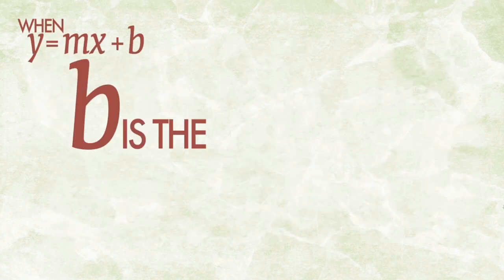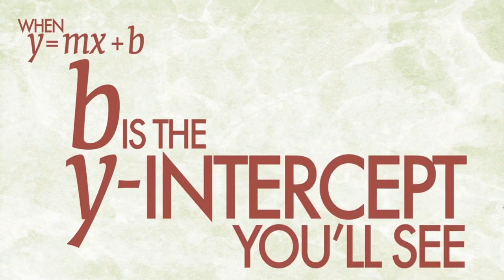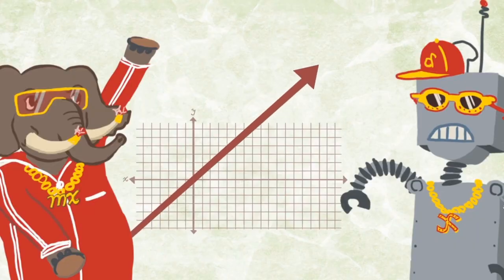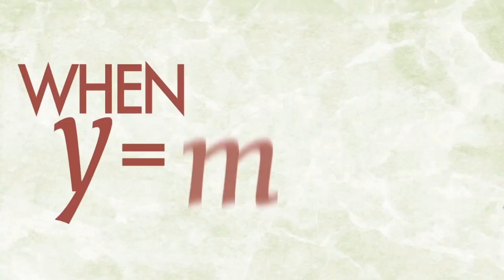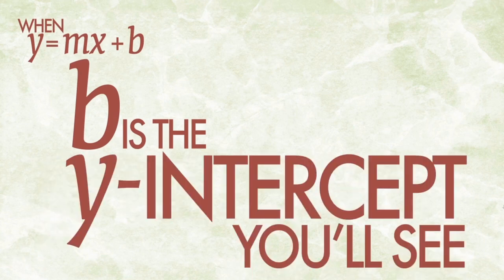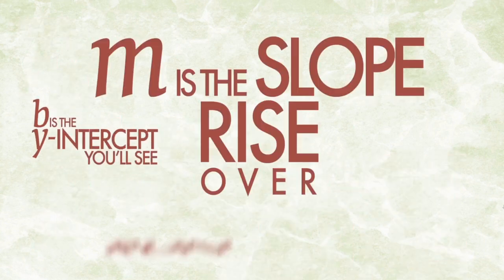When Y equals MX plus B, B is the Y-intercept you'll see, M is the slope rise over run. Then wait until we stop but the day will never come. When Y equals MX plus B, B is the Y-intercept you'll see, M is the slope rise over run. Then wait until we stop but the day will never come.